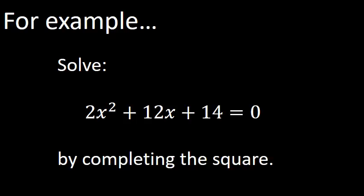Let's look at an example: 2x squared plus 12x plus 14 equals 0. This is a quadratic equation with rational coefficients and we're going to go through the six steps to solve it. The degree of a quadratic is 2, so there will be two solutions — or one double root.